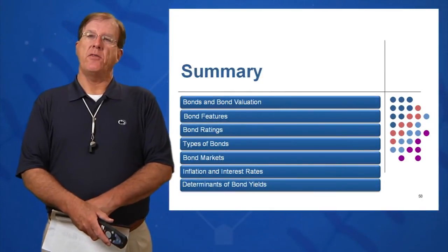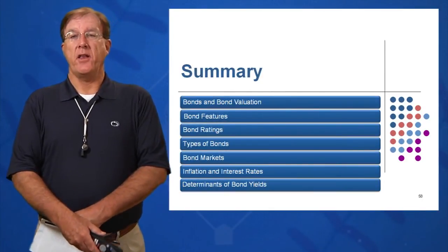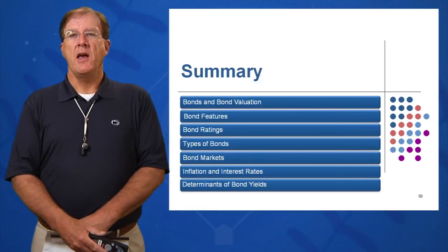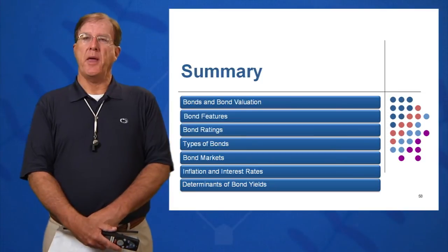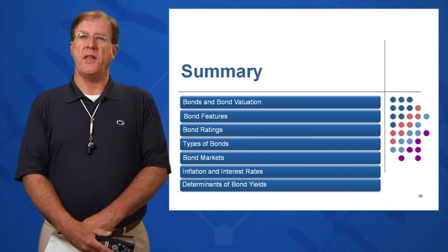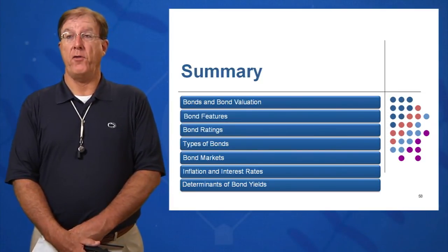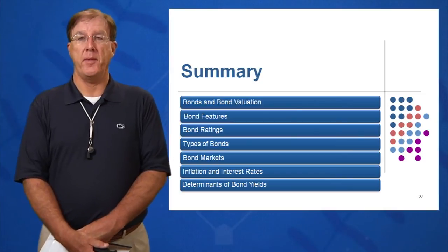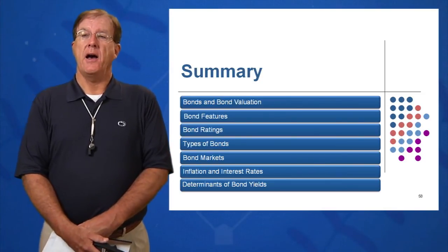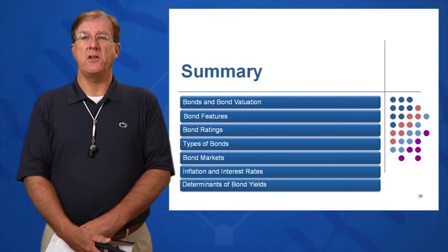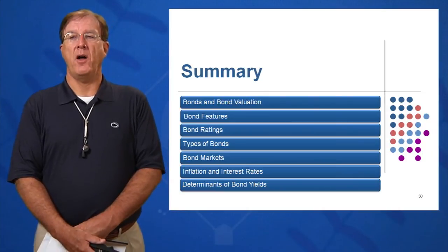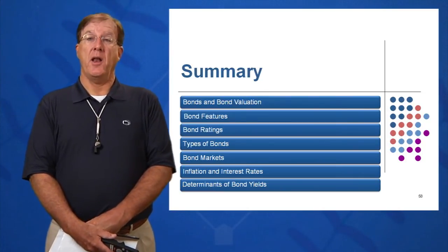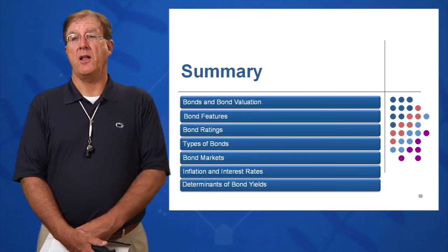In summary, we've gone through seven learning objectives in session seven — seven for seven. You should now be able to understand what a bond is, understand the bond formula, and how to value a bond. It's one formula. Learning objective two covered features of bonds — how bonds differ, and the unique terminology of bonds.